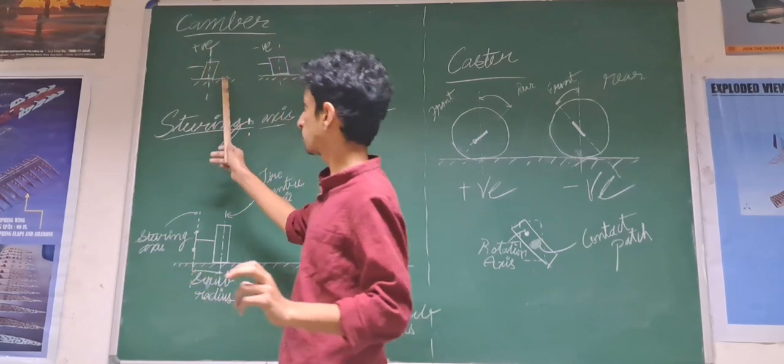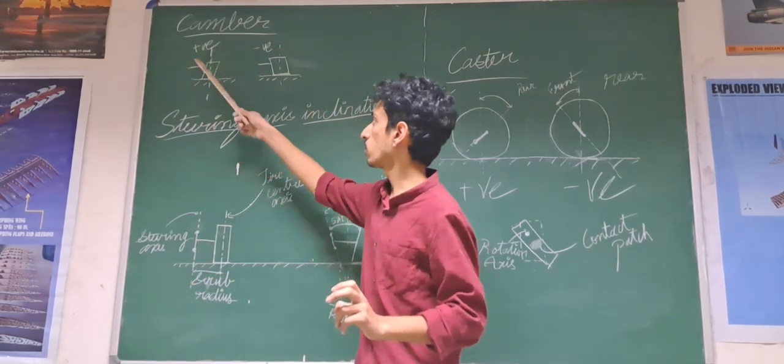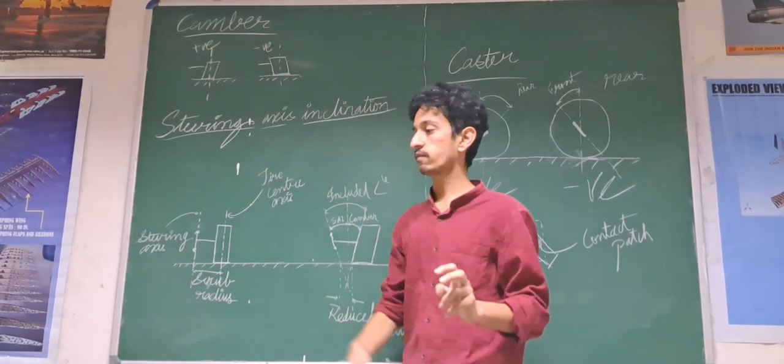When the tire is tucked inward with respect to the vertical line, it is positive camber. When it is tucked outward, it is called as negative camber.